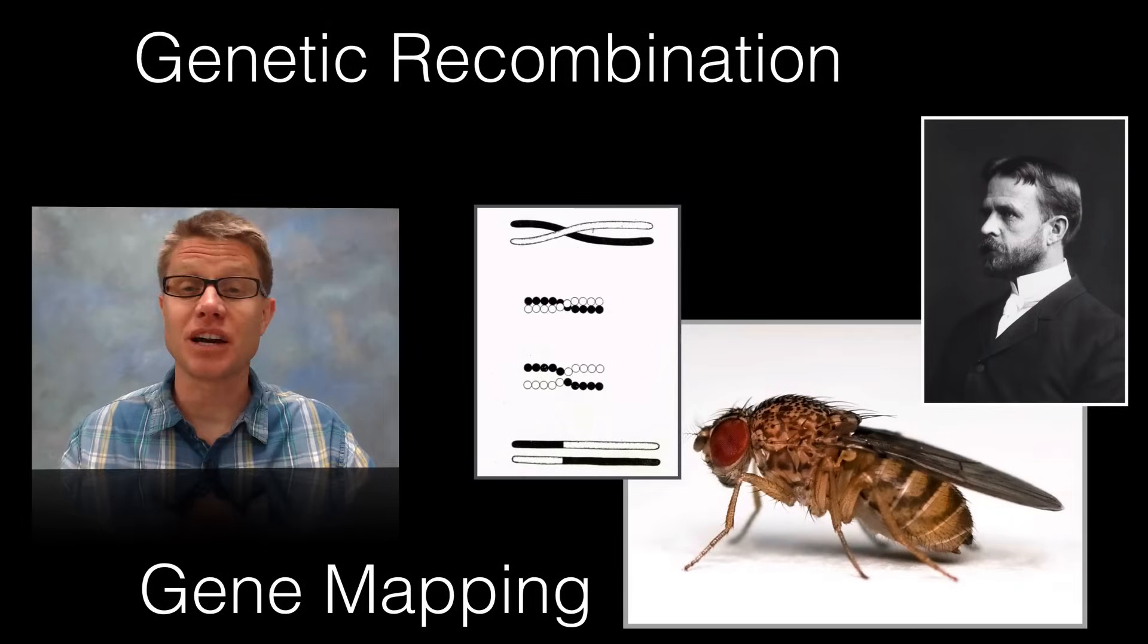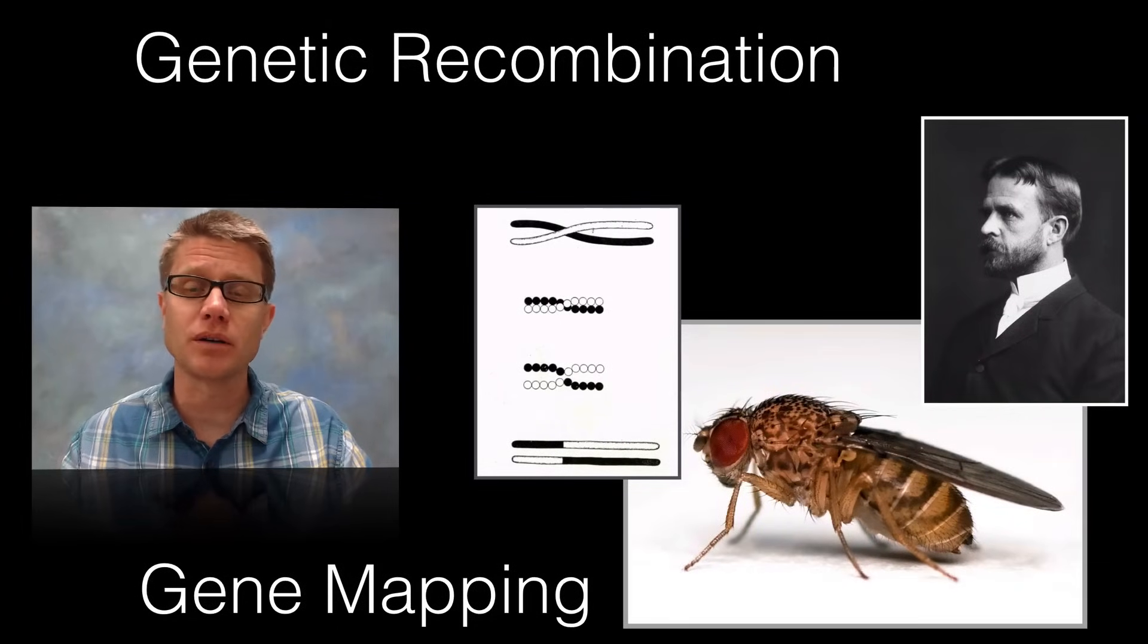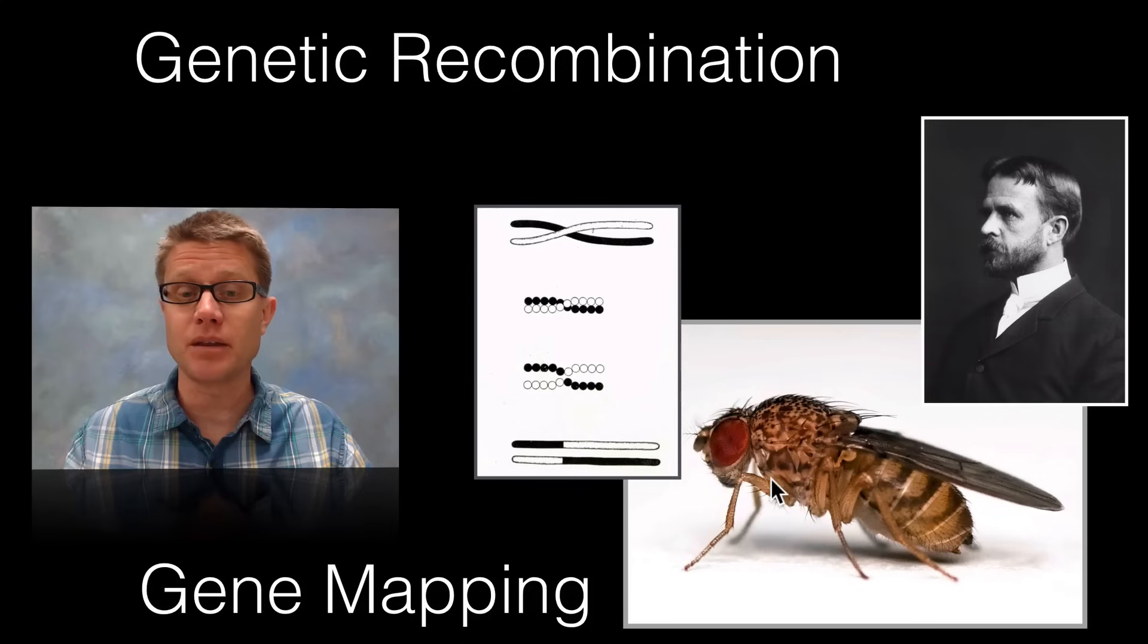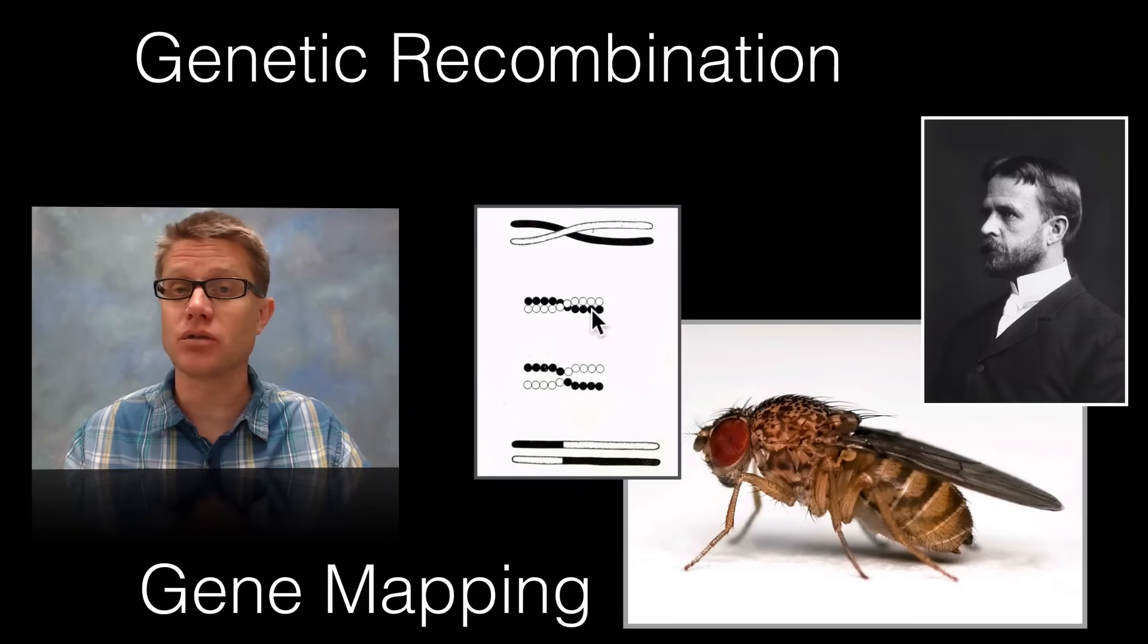Hi, it's Mr. Andersen and in this video I'm going to talk about genetic recombination and gene mapping. It centers on the work of Thomas Hunt Morgan who used fruit flies to show that genes don't travel by themselves, they actually travel on chromosomes.